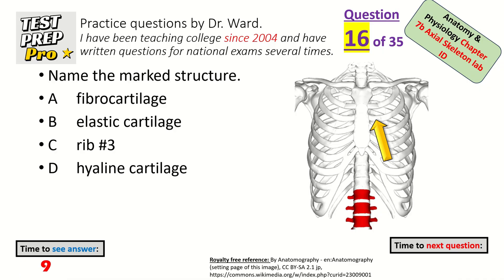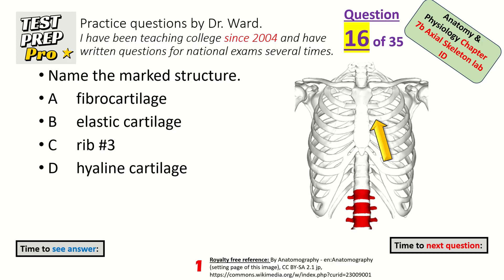Name the marked structure — it's just lateral to the sternum, it's like a soft, rubbery material. Hyaline cartilage.